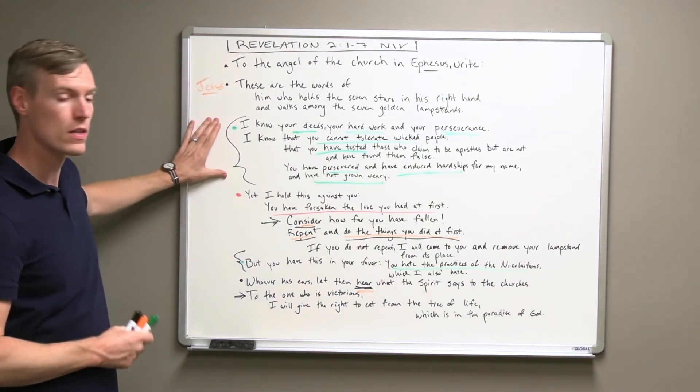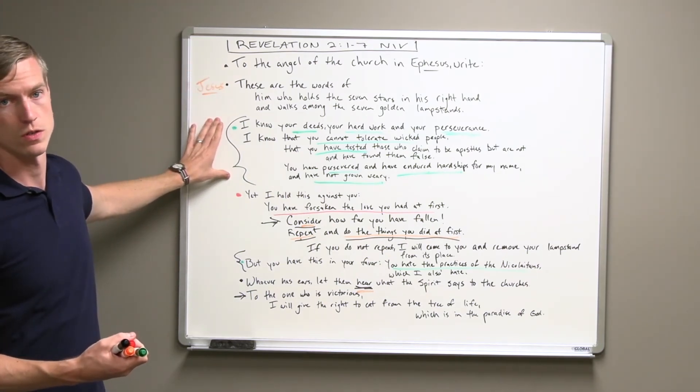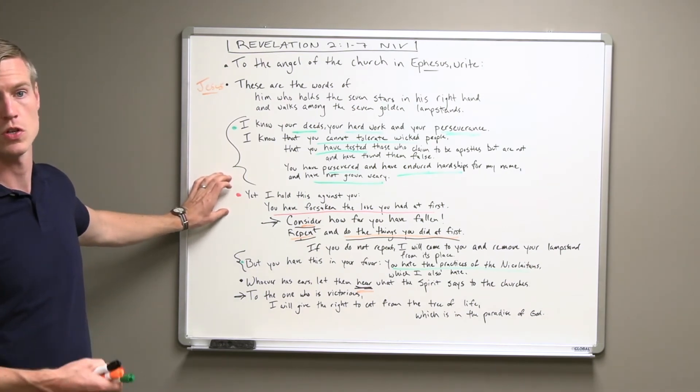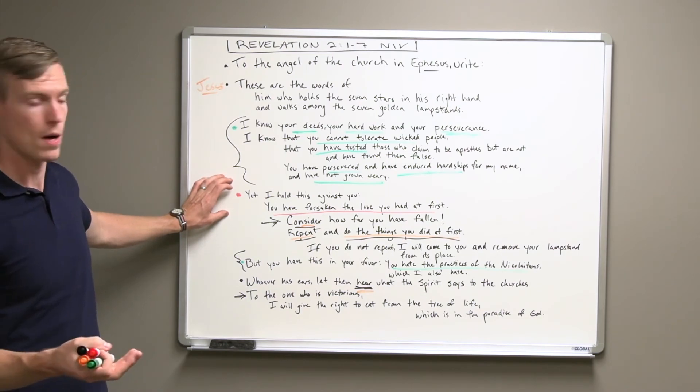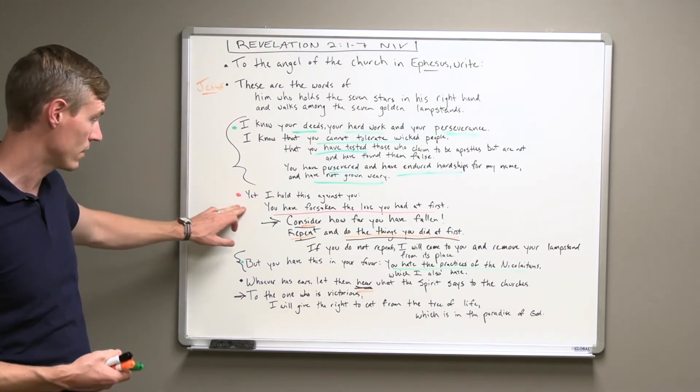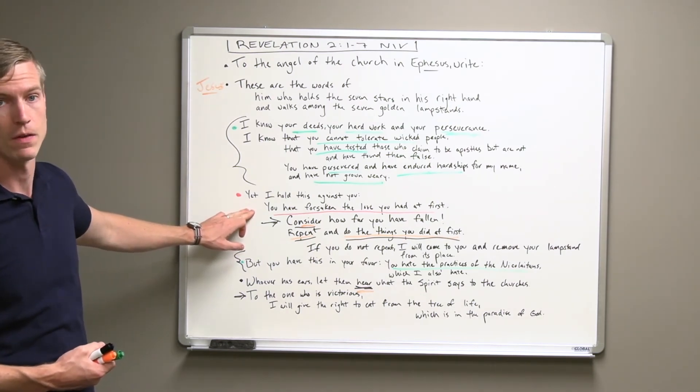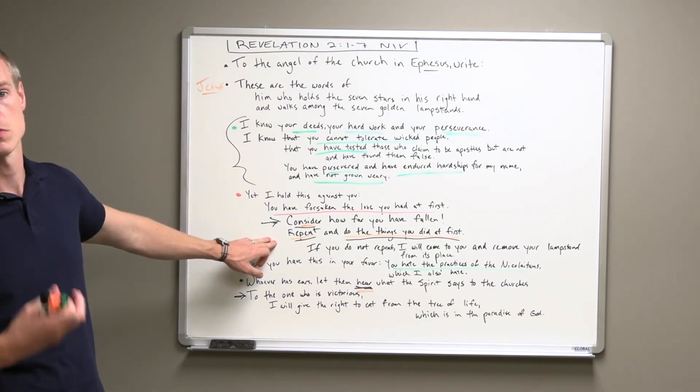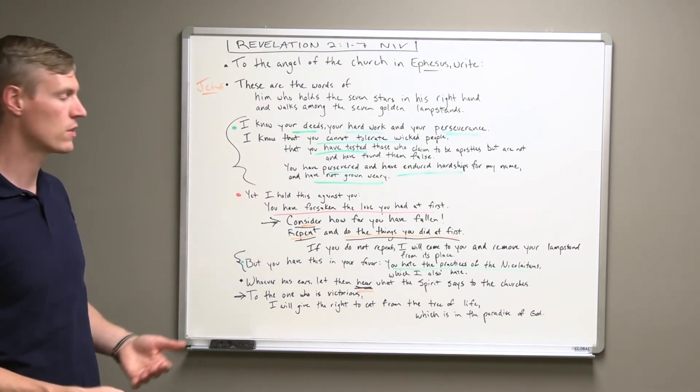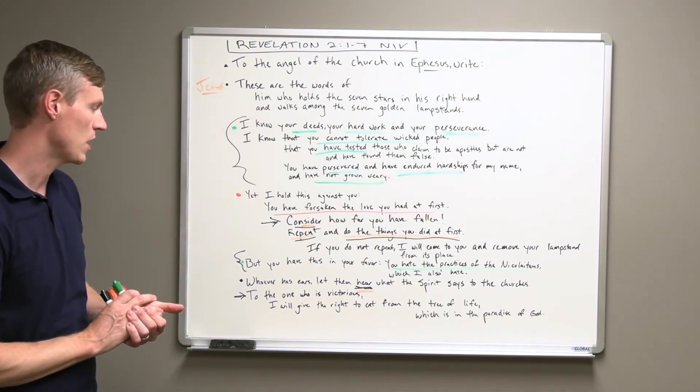And then looking at some of the things that Jesus wants to see in the church and looking at some of the problems. For some of the church, it's moral compromises. For some of the churches, it is religious compromises. For them, it's simply getting back to the love that they have. And so we see where some of the churches have gone wrong, and then we see what Jesus commands them to do, to repent where they need to repent, how they need to hold fast, how they need to be faithful to Him.